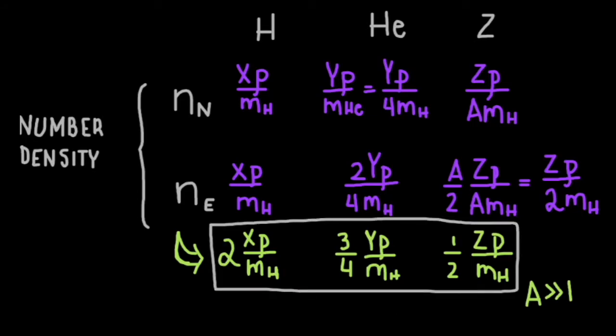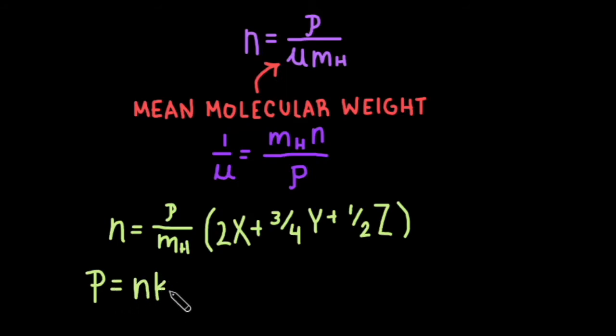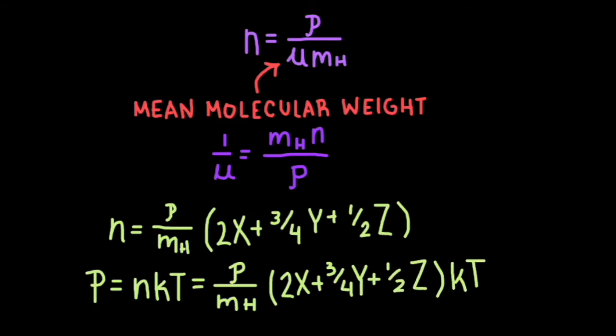Substituting these terms in for mu, the total number density becomes rho over the mass of hydrogen times 2x plus 3 fourths y plus 1 half z, and gas pressure becomes rho over mh times 2x plus 3 fourths y plus 1 half z times kt.